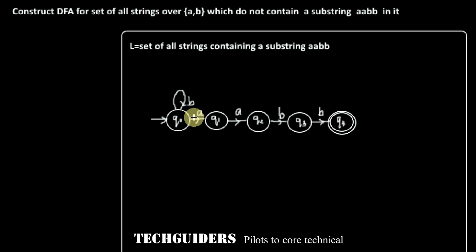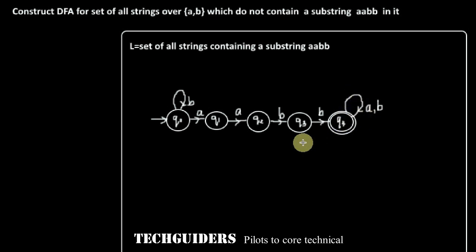Since the string already contains the substring AABB, if it is followed by any number of A's or B's or their combination, it remains in state Q4, which remembers the string already contains this substring. Now to complete this DFA, we have a transition on A and transition on B from Q4, and a transition on B from Q3.